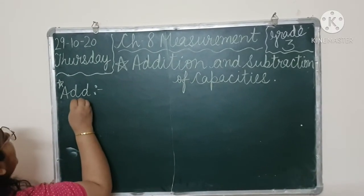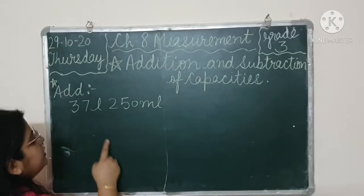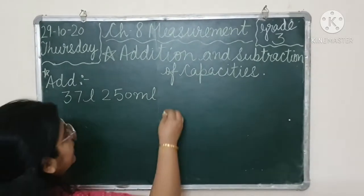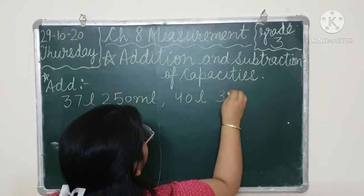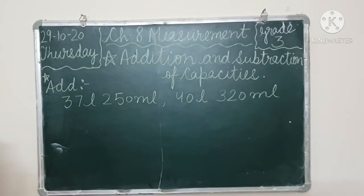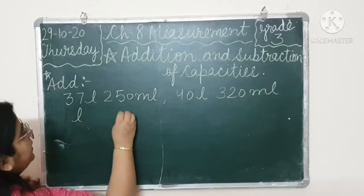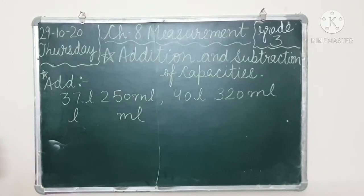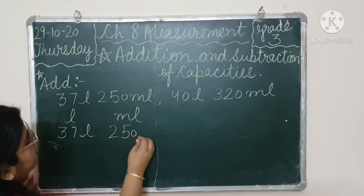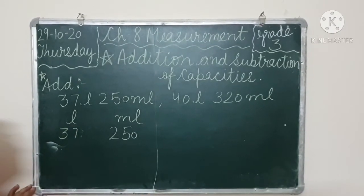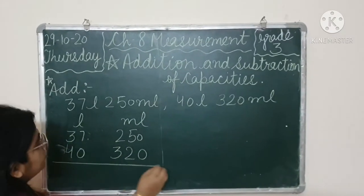Addition. Suppose we have 37 liter 250 milliliter. We have to add this with 40 liter 320 milliliter. So, we will add this. In addition we can write any number on top or bottom. But, first we maintain columns. How columns? Liters below liters and milliliter below milliliter. So, 37 liter 250 milliliter, and here 40 liters, 320 milliliter.